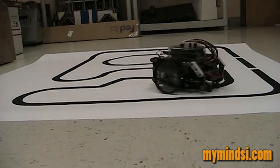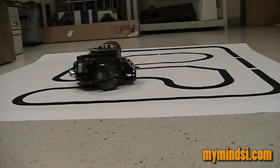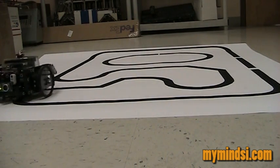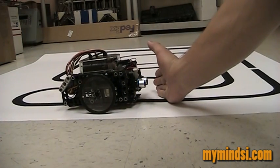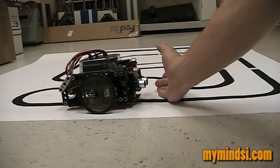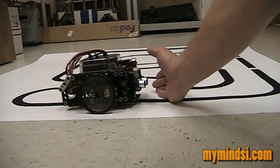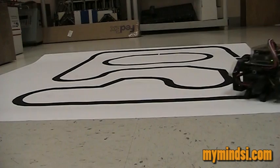The kit also includes an ultrasound ping sensor which can be used to avoid objects or in this line following code to stop when there's an object placed in front of the robot and continue going once the object is removed.